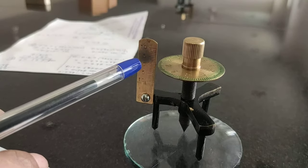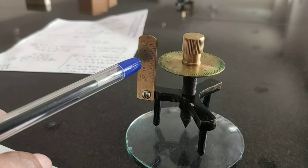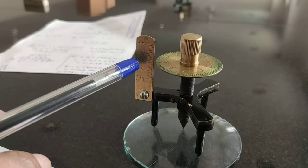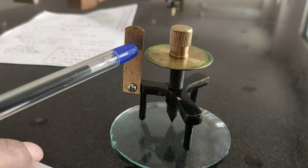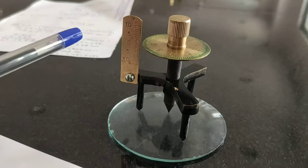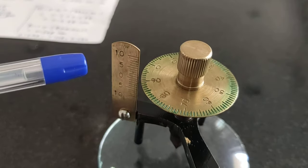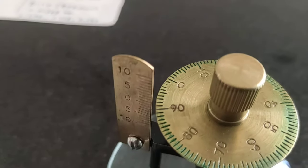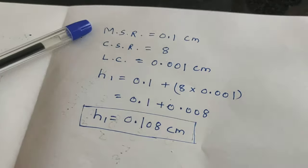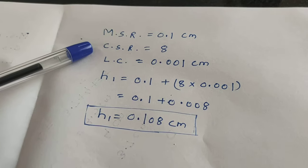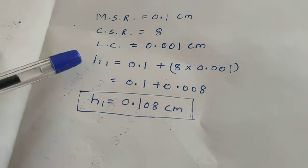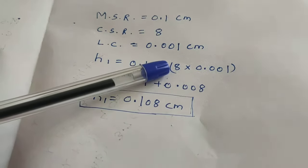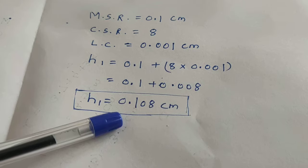Where this circular disc is attached to the scale is the main scale reading, which is 0.1 cm. One division represents 0.1 cm. Now see which circular scale coincides with it. The 8th circular scale is coinciding with it. Main scale reading is 0.1 cm, circular scale reading is 8, least count is 0.001 cm. Hence h1 equals 0.1 plus 8 times 0.001, which gives 0.108 cm.